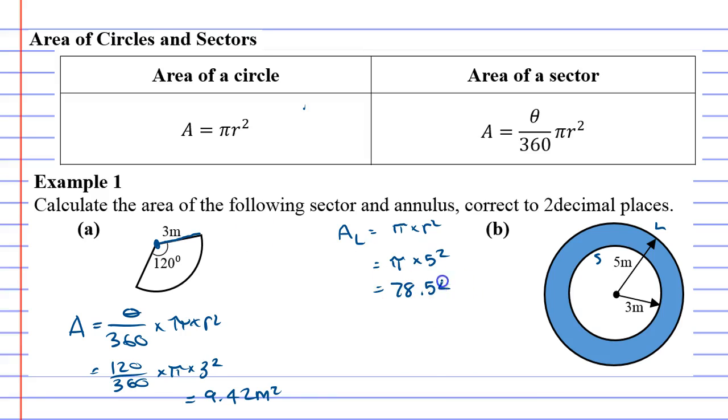Now let's find the area of the small circle, which is again pi times r squared, or pi times three squared this time, since the smaller circle has a radius of three. Pi times three squared is 28.27 meters squared.